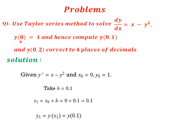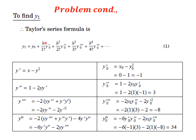Given: y' = x - y², x₀ = 0, y₀ = 1. For finding y1, h = x1 - x₀ = 0.1 - 0 = 0.1. The Taylor series formula for y1 is: y1 = y₀ + h/1! · y₀' + h²/2! · y₀'' + h³/3! · y₀''' + h⁴/4! · y₀'''' . I'll take up to the fourth derivative.